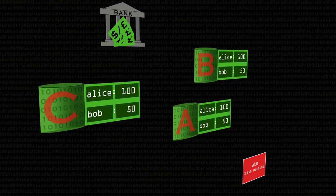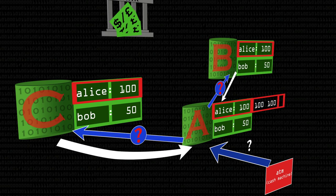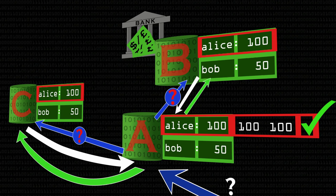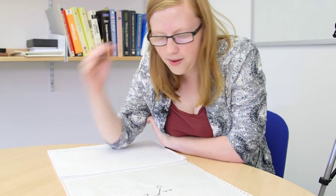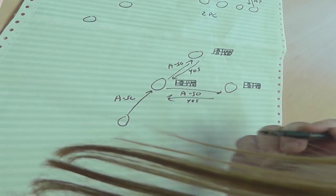So the machine contacts the other machines and says, how much money does Alice have? These machines respond — let's assume that's back at £100 again. And once this machine has got the responses, we can say OK, thank you, and return the result back. Importantly, these machines say yes, that would be OK, but they don't actually take the money out of the account at that point. In the same way that when someone says can you do coffee at 2, you don't immediately put it in your calendar — you wait for them to confirm before you do that.